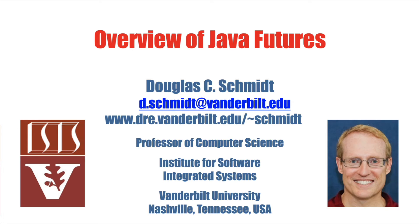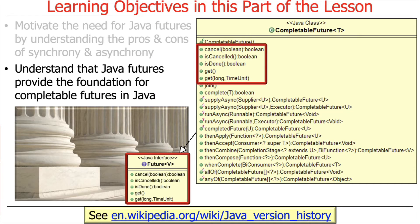We're going to continue with what we were talking about last time with respect to asynchrony. We talked about the pros and cons of synchrony, we talked about the pros and cons of asynchrony, and now we're going to start delving deeper into how asynchrony is supported in Java, beginning with the historical support provided by Java Futures. Java Futures provide a foundation for the more powerful features called completable futures.